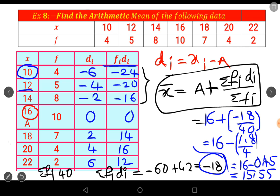In the deviation method, one column is extra. That is deviation, d_i equal to x_i minus A. Here, to find f_i into d_i is the fourth column. The mean is equal to, by deviation method, A plus sigma f_i d_i by sigma f_i. Write down in your notebook.